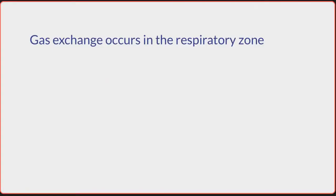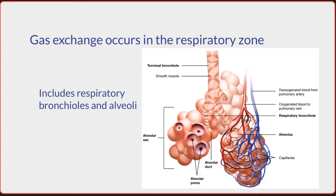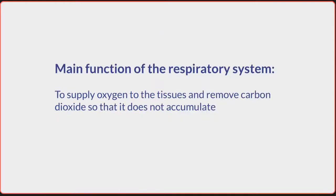Gas exchange is the process by which oxygen and carbon dioxide are exchanged between the lungs and the bloodstream. This process occurs in the respiratory zone, which includes the respiratory bronchioles and alveoli. This is the main function of the respiratory system, to constantly and consistently supply oxygen to the tissues and to remove carbon dioxide so that it does not accumulate. Seems simple enough, but what is the physiology behind how this actually happens?